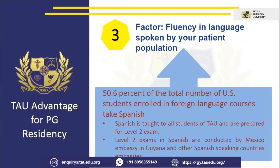The third factor is fluency in the language spoken by your patient population. As far as the US is concerned, 50.6% of the total number of US students enrolled in foreign language courses take Spanish. Spanish is one of the most spoken languages in the United States. As far as TAU is concerned, Spanish is taught to all students of TAU and they are prepared for the Level 2 examination, which is conducted by different embassies in Guyana.